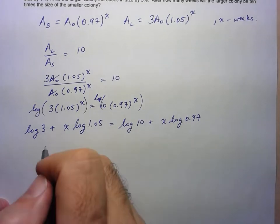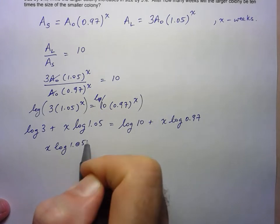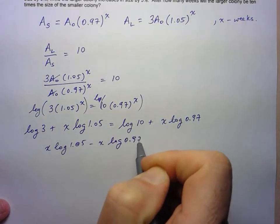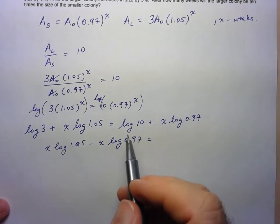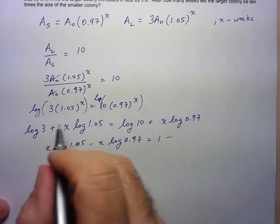So I'll bring all the X's to one side. So X log 1.05 minus X log 0.97. And on the other side, we have log of 10, just log base 10 of 10 is just 1 minus the log 3.